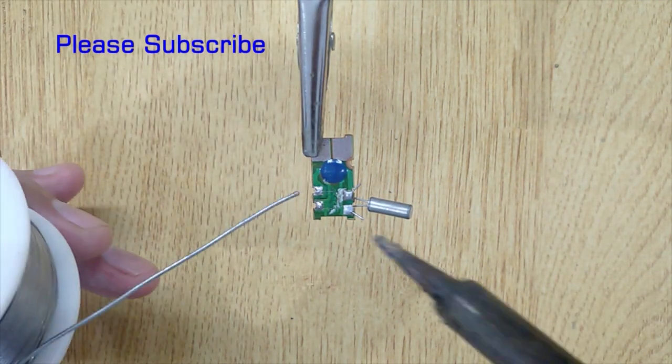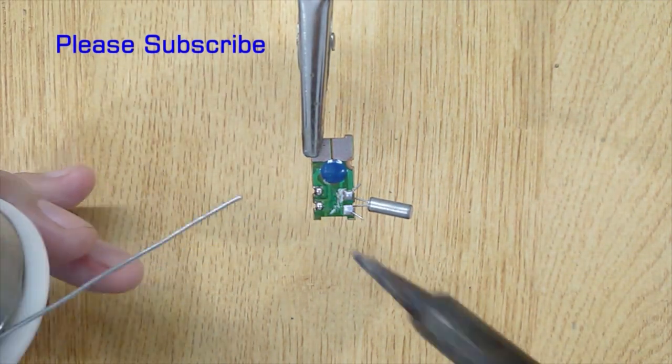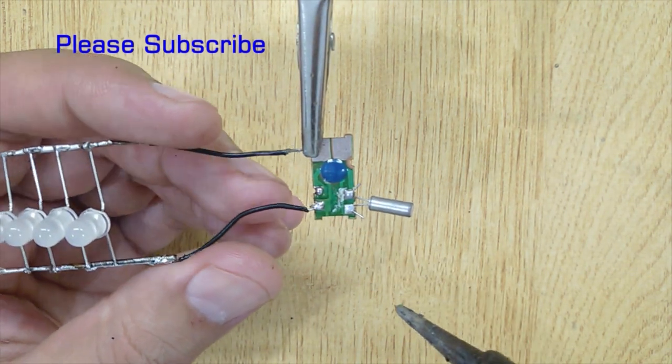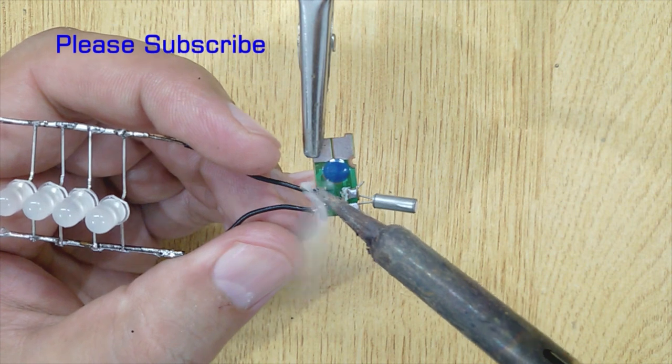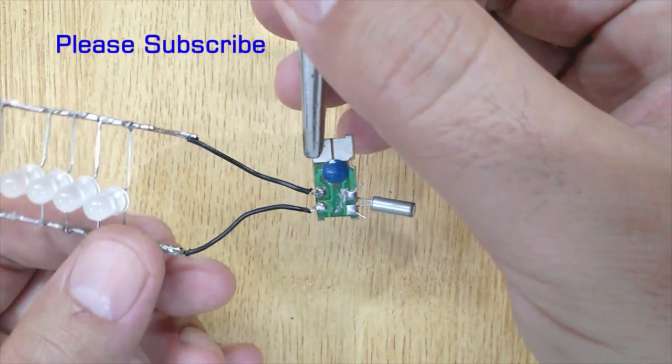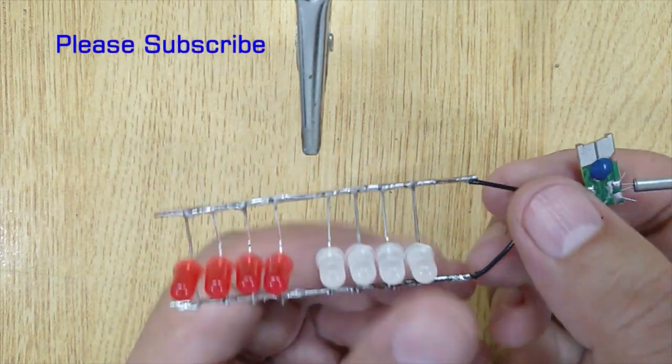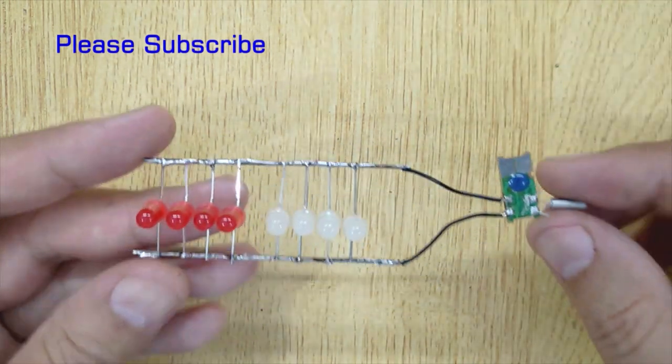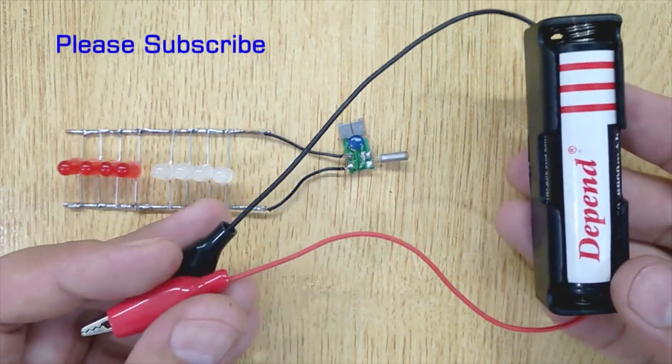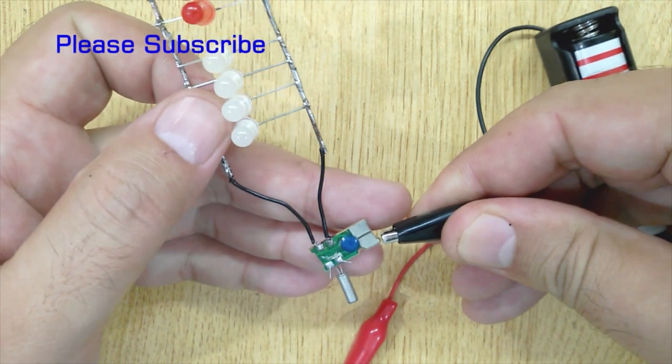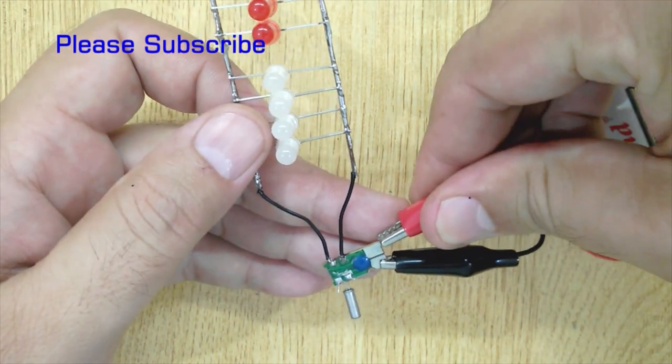These two are the output connections. Solder these wires with these two points. Now connect 3.7 volt battery and you are done. Now you have an awesome LED light strobe.